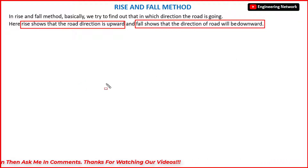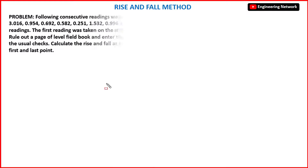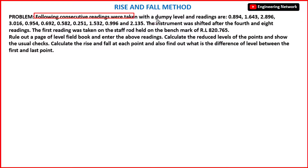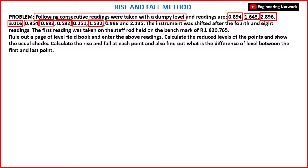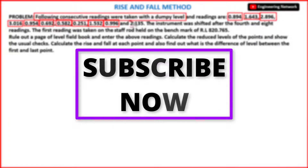Let me show you the whole process by solving a practical example. The problem states that the following consecutive readings were taken with a dumpy level: 0.894, 1.643, 2.896, 3.016, 0.954, 0.692, 0.582, 0.251, 1.532.